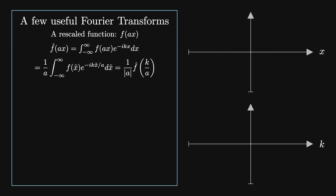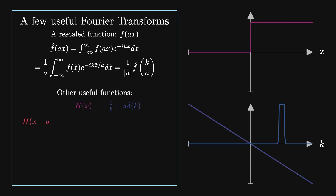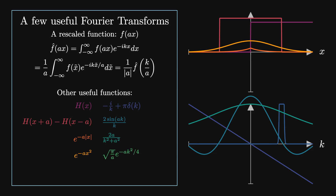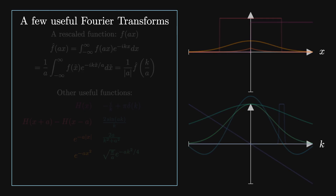In practice, there are tables of Fourier transforms for the most common functions. Here are a few useful ones: The Fourier transform of the Heaviside step function is minus i over k plus pi times delta of k. The Fourier transform of a square pulse of width 2a is 2 sin(ka) over k. The Fourier transform of a decaying pulse e to the minus a times the absolute value of x is 2a over k squared plus a squared. And the Fourier transform of a Gaussian e to the minus a x squared is a Gaussian: root pi over a times e to the minus k squared over 4a.